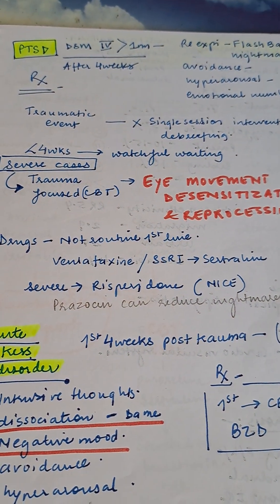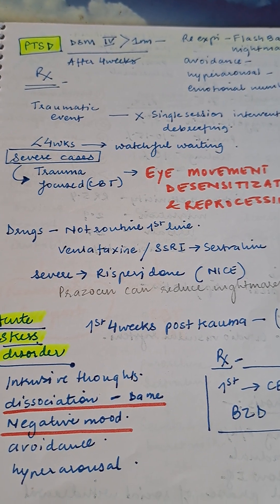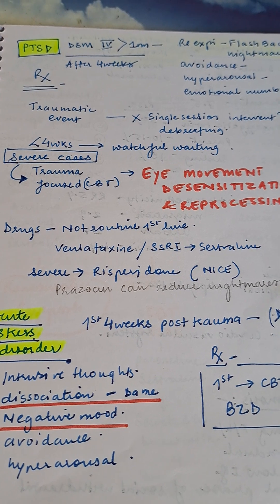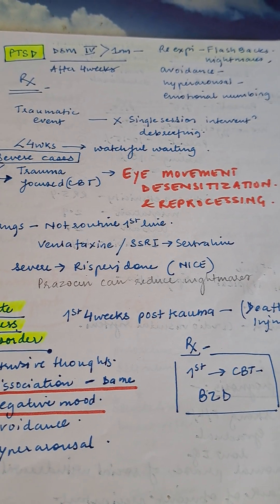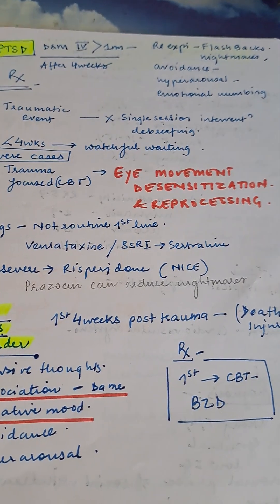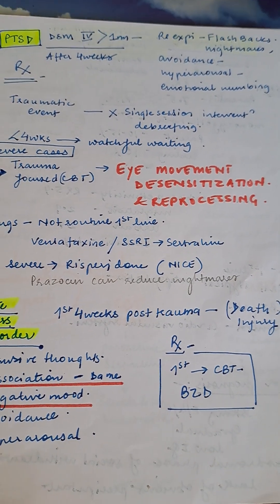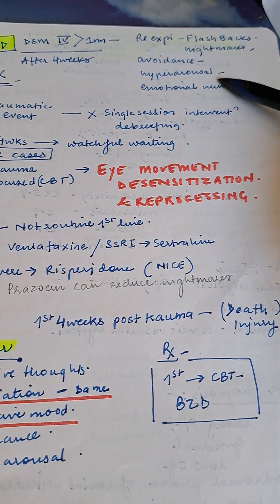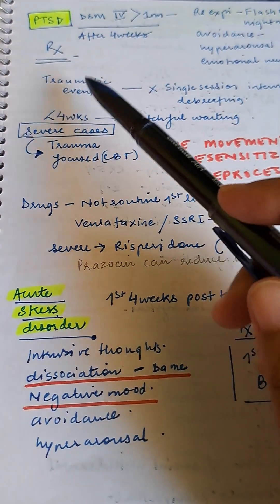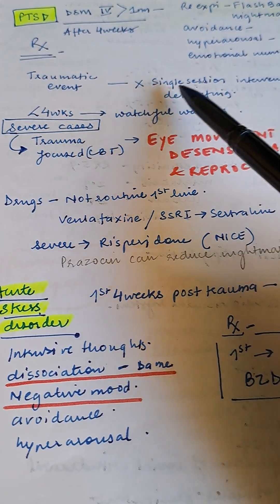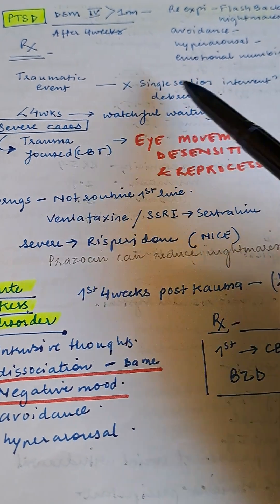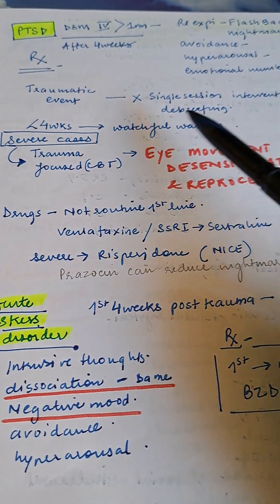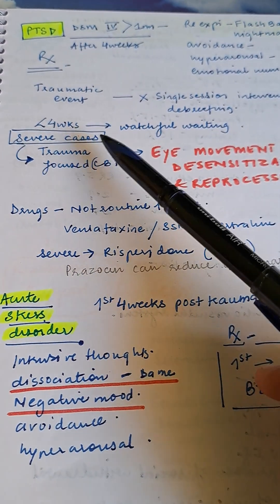Psychiatry. Post-traumatic stress disorder is diagnosed after four weeks as per DSM-4. Symptoms include re-experiencing, flashbacks, nightmares, avoidance, hyperarousal, and emotional numbness. Treatment involves single session intervention for the traumatic event. Depression is not required. If symptoms are less than four weeks, watchful waiting is recommended.